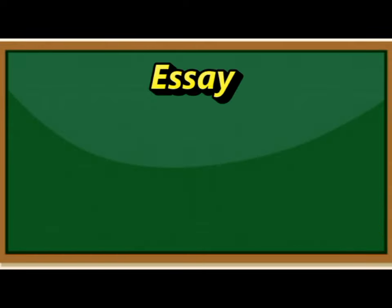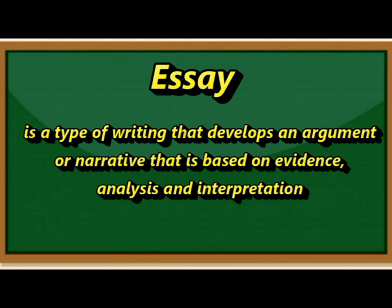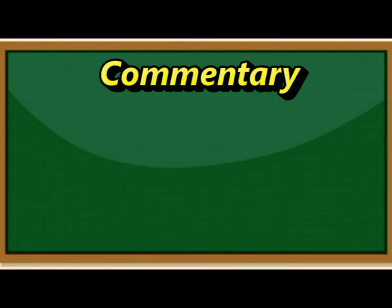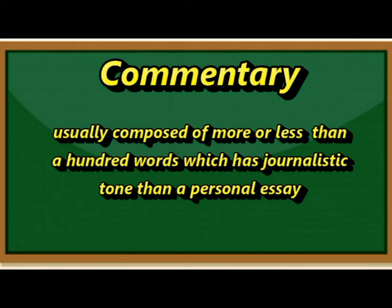Number one, essay. It is a type of writing that develops an argument or narrative that is based on evidence, analysis, and interpretation. Examples: Self-Reliance by Ralph Waldo Emerson and The Death of a Moth by Virginia Woolf. Number two, commentary. It is usually composed of more or less than a hundred words and has a more journalistic tone than a personal essay.